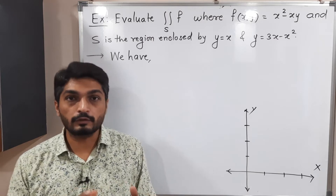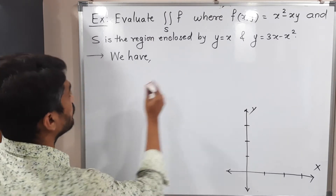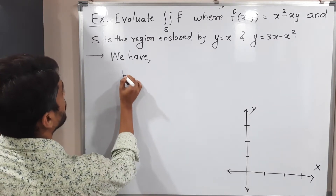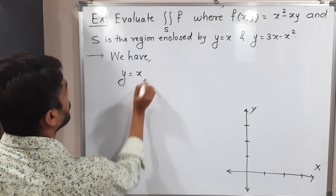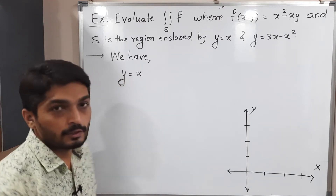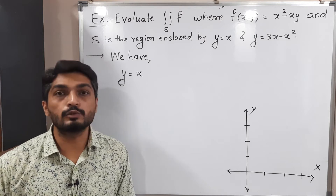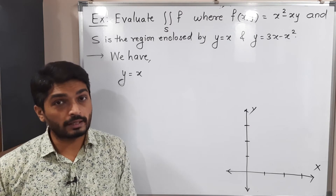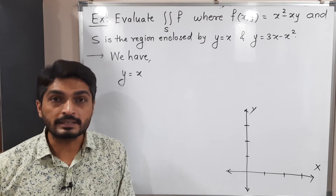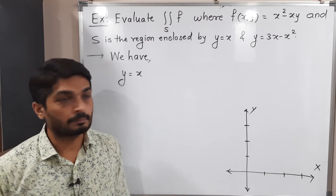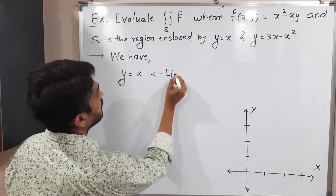Let us try to find the region of integration. We have the first curve y = x. Here the power of x is 1 and power of y is also 1. You know that if the power of both variables is 1, it represents a line.